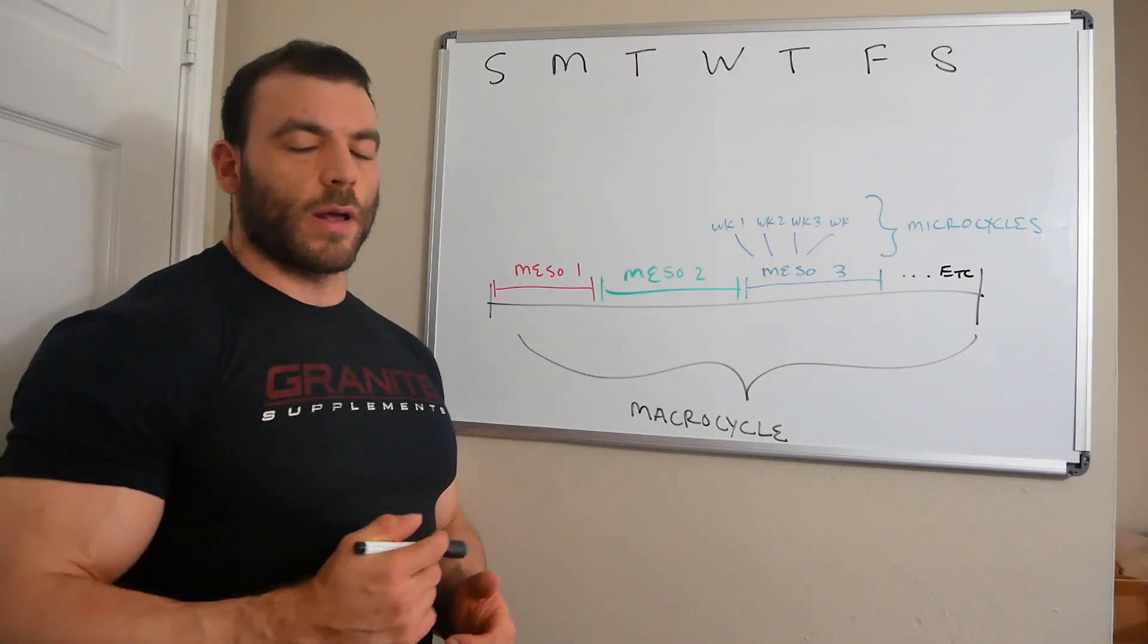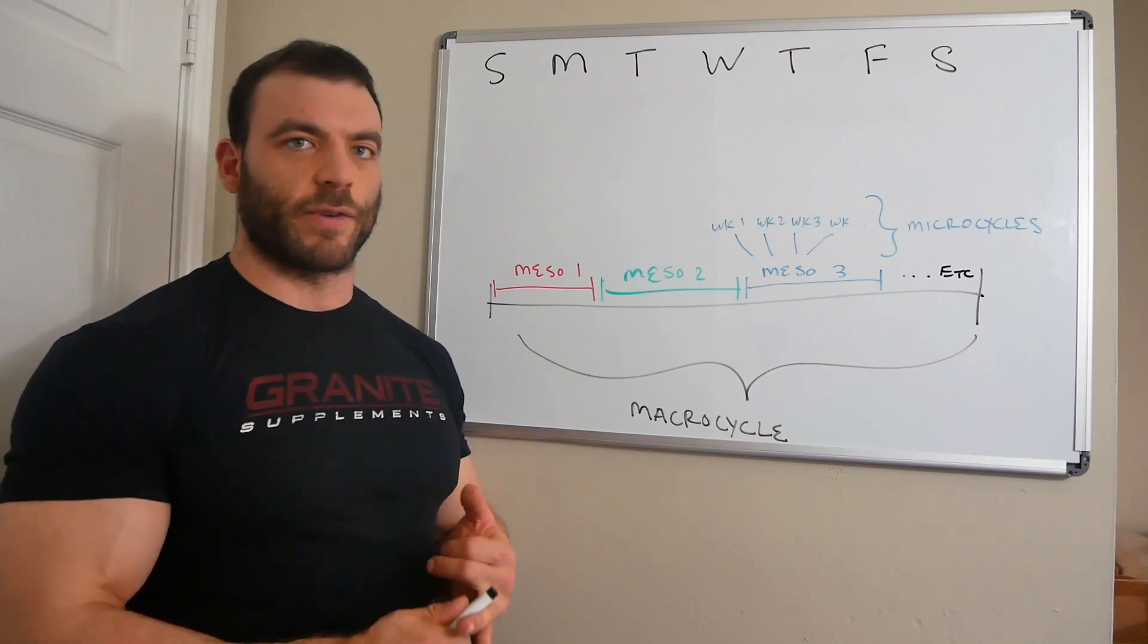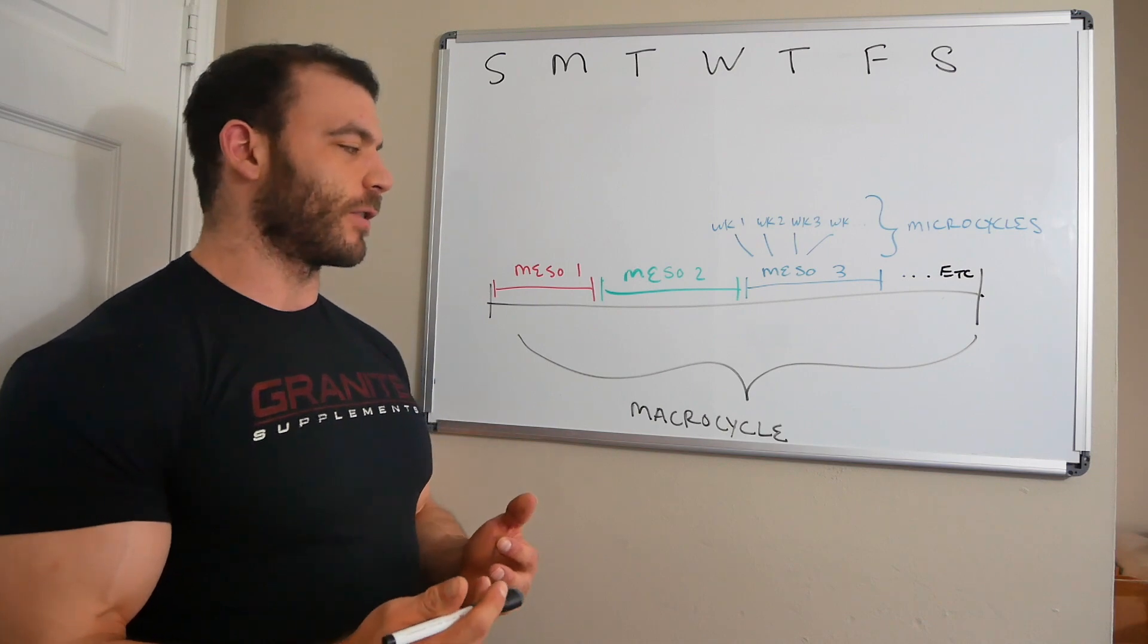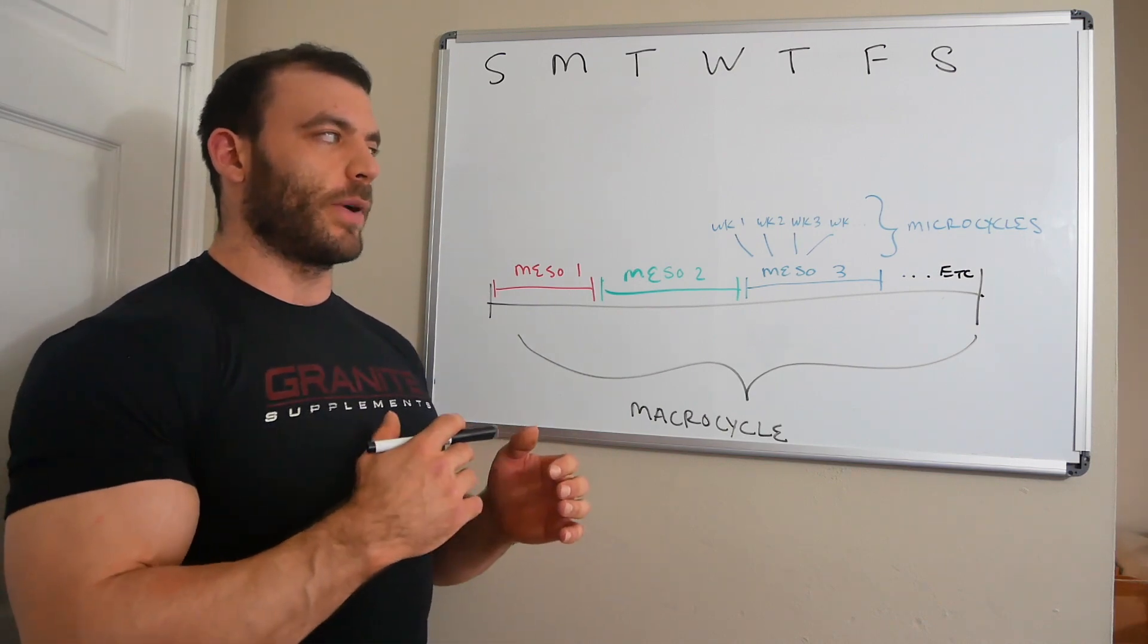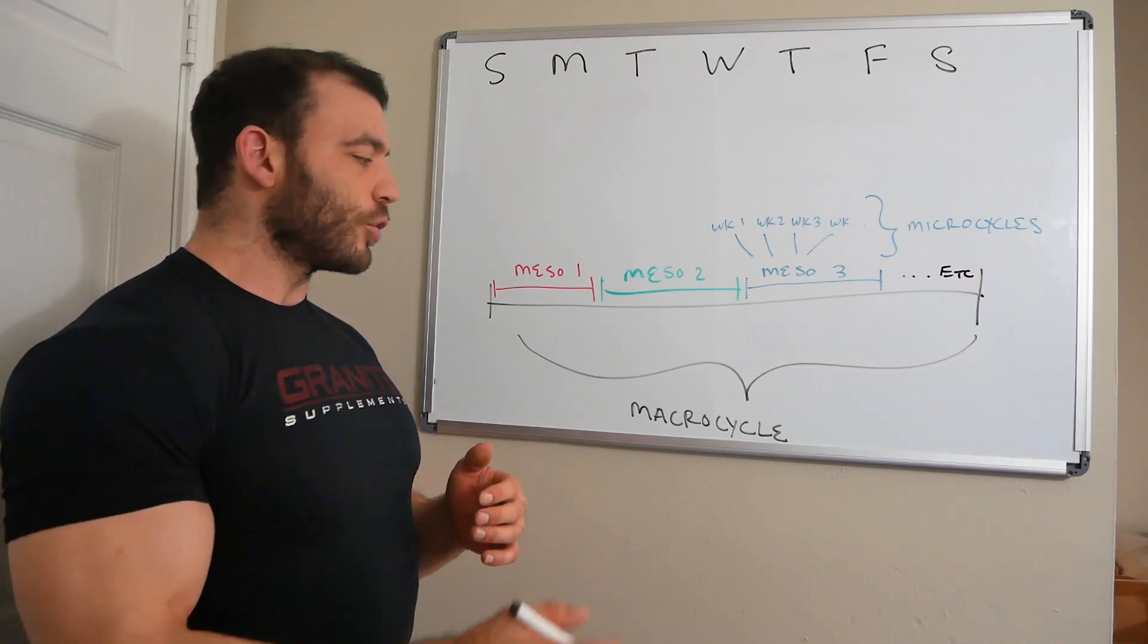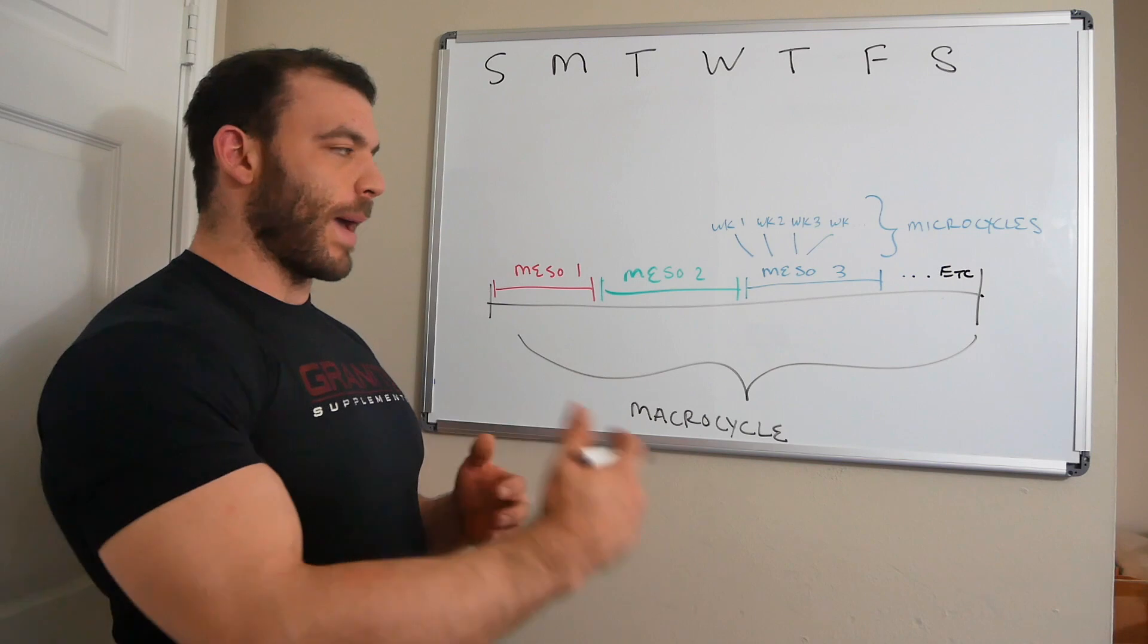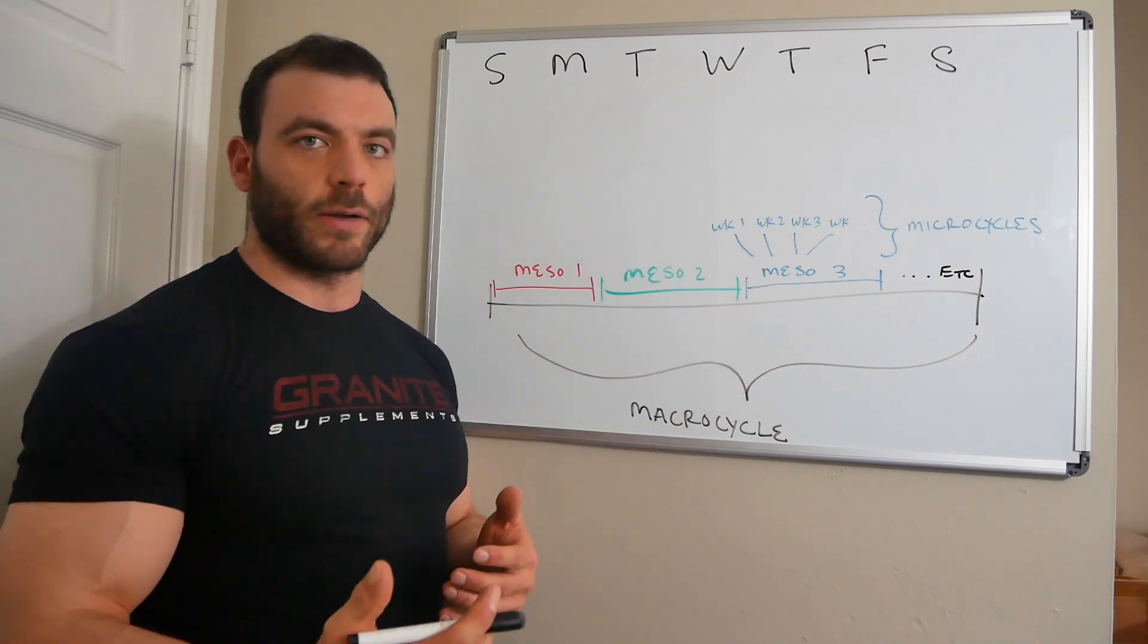We've almost got all the pieces that we need to start getting into the actual fun stuff - writing the splits, writing the sets and reps, probably the stuff that you guys are watching for in the first place. Before we get there, we need to talk a little bit about how periodization is generally programmed for the long term. Traditionally what you'll have is called a macro cycle, mesocycle, and micro cycle. That's where the term training cycle actually comes from.